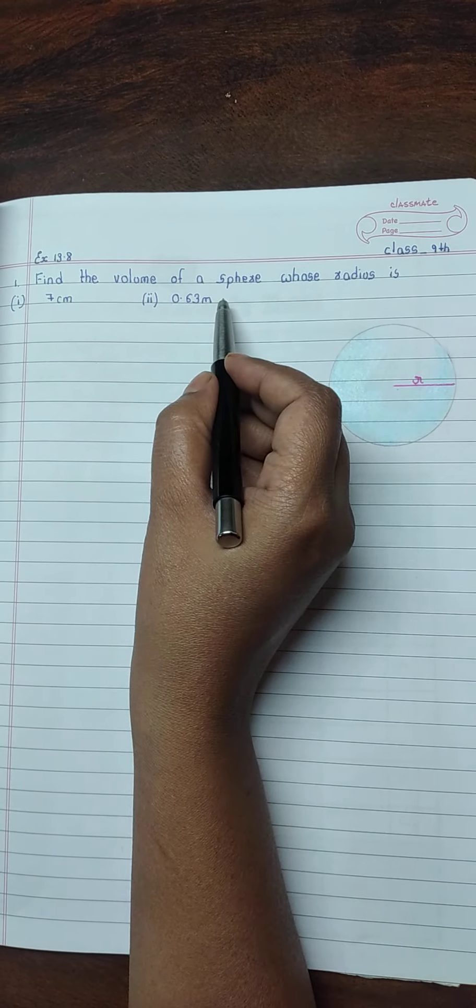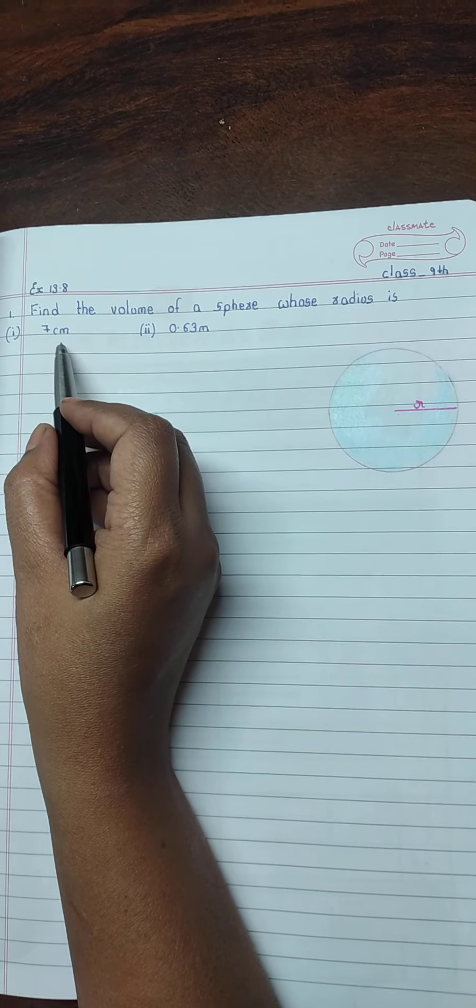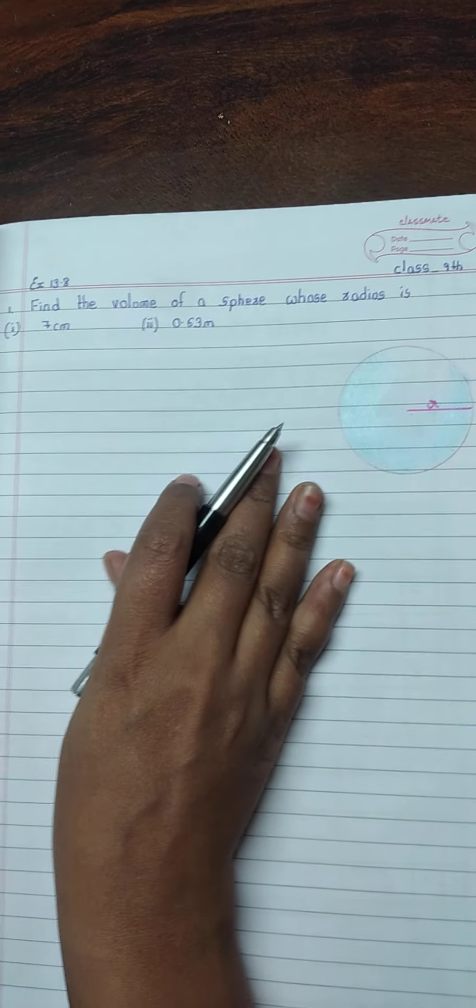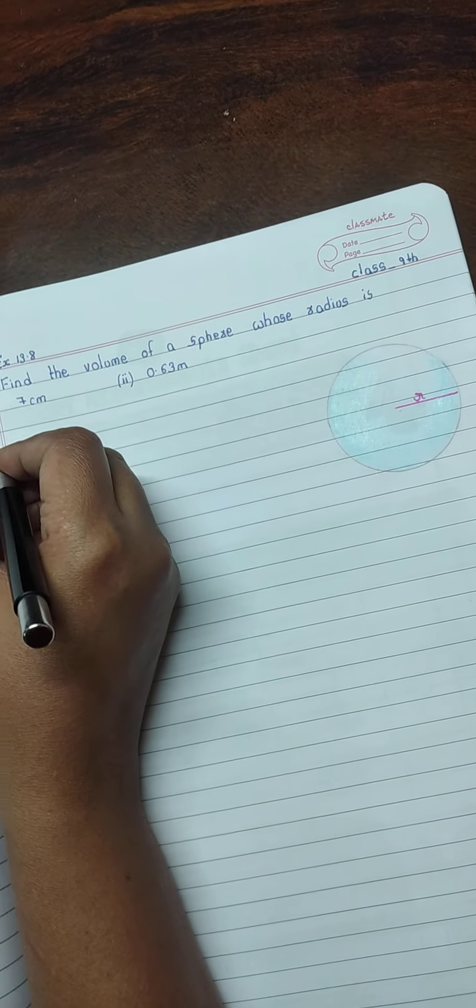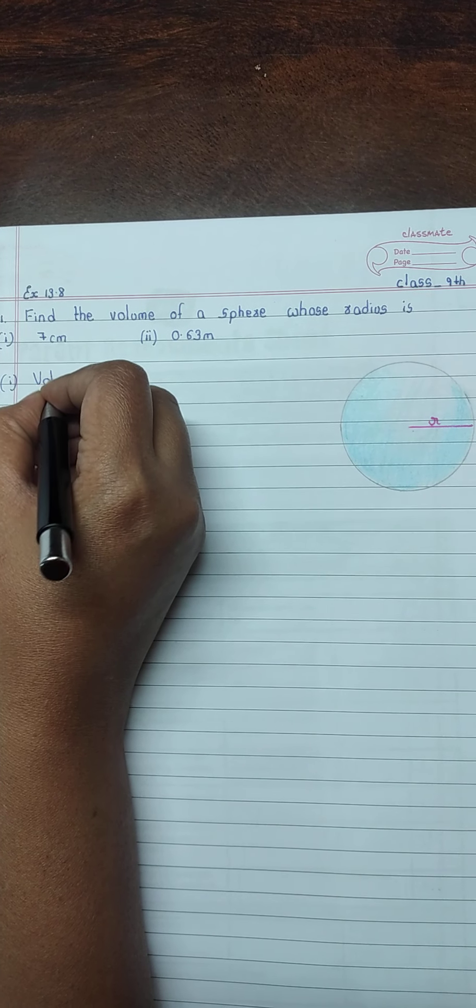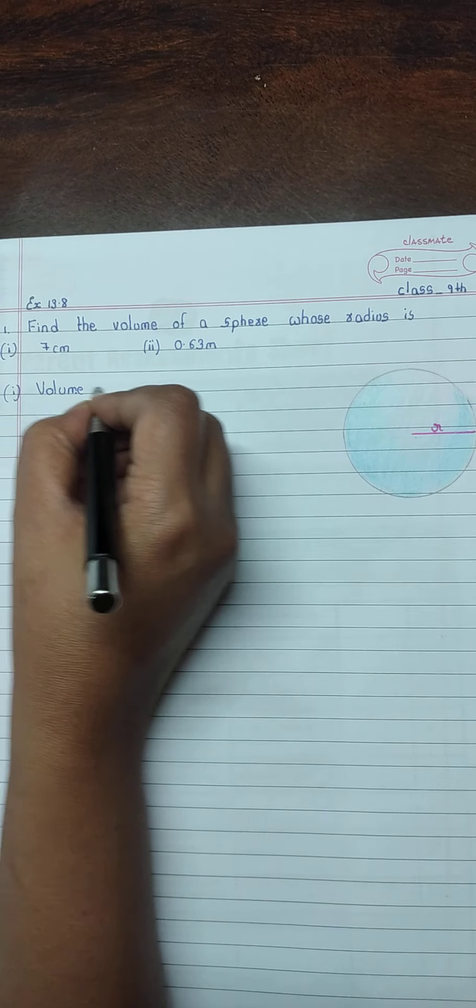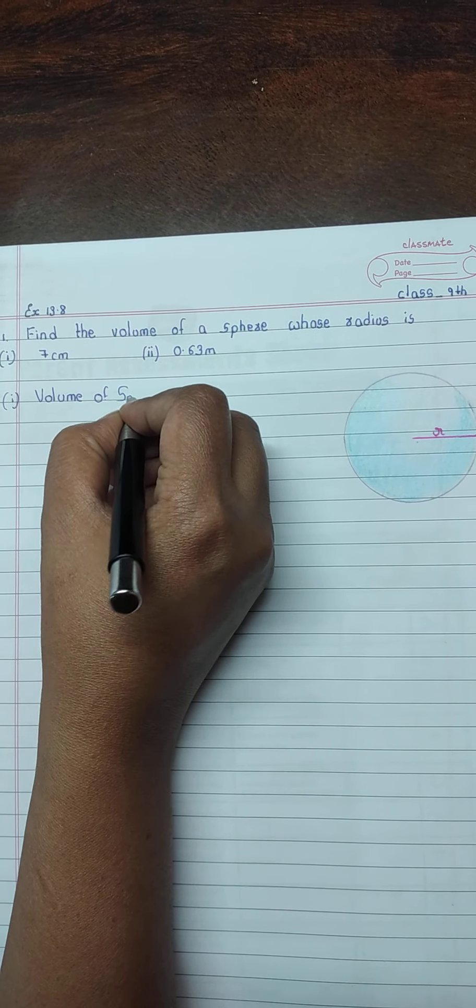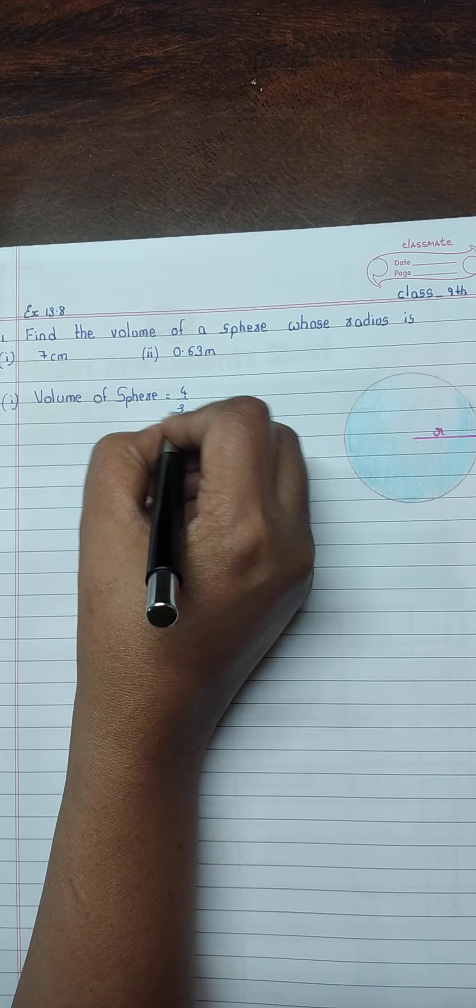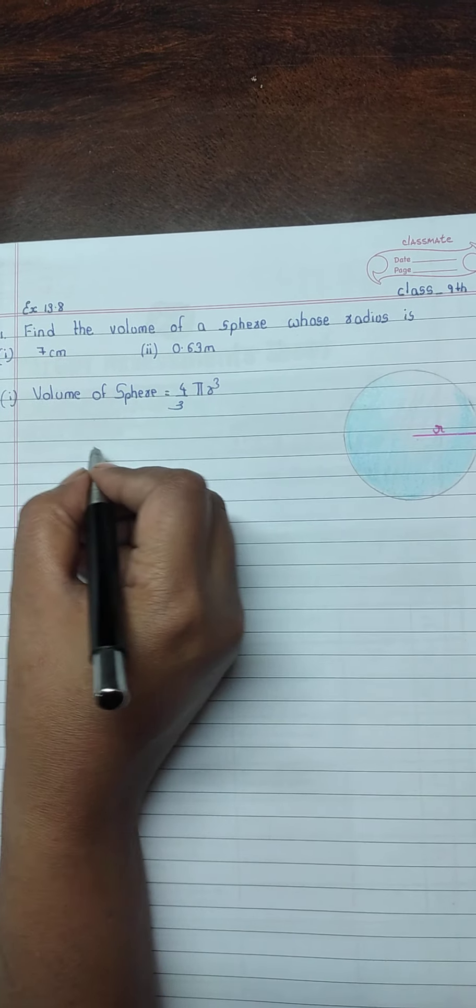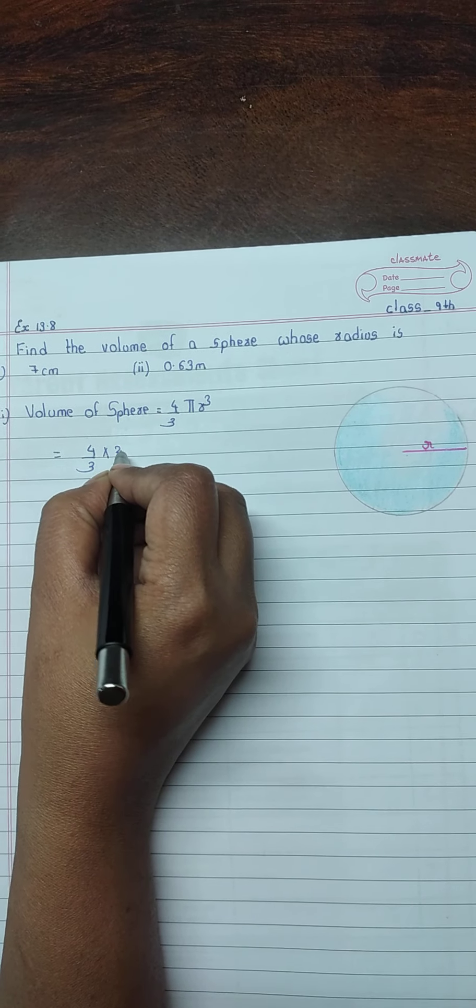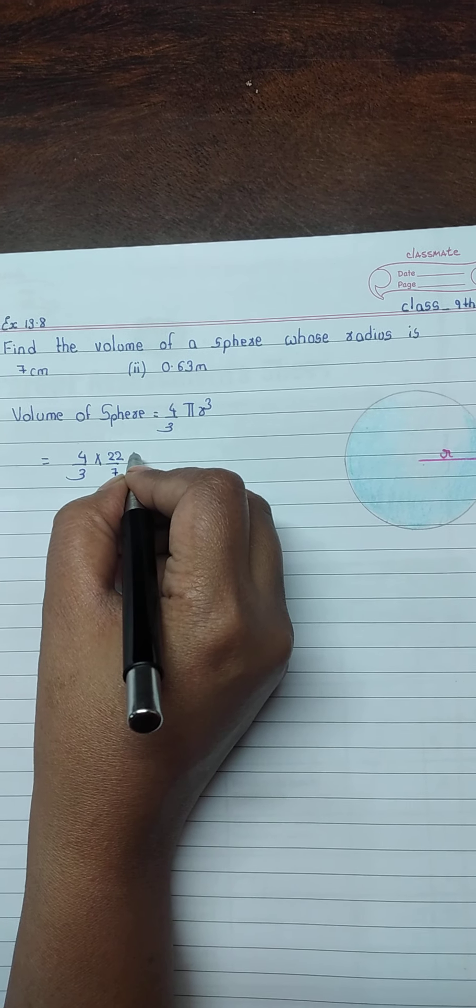Find the volume of a sphere whose radius is first 7 cm and second 0.63 m. Volume of sphere equals 4 by 3 pi r cubed. 4 by 3, pi value is 22 upon 7, and radius is 7 cm.